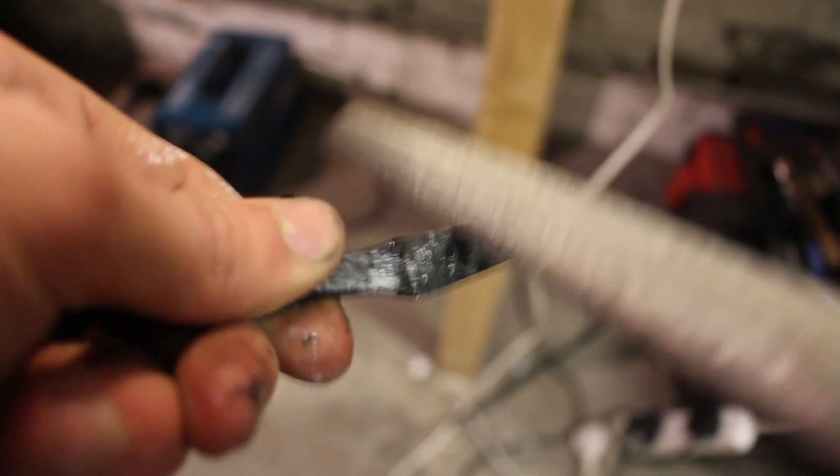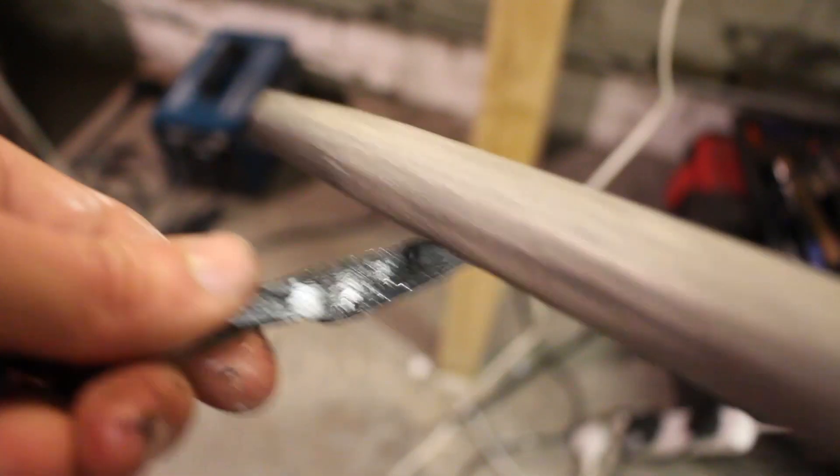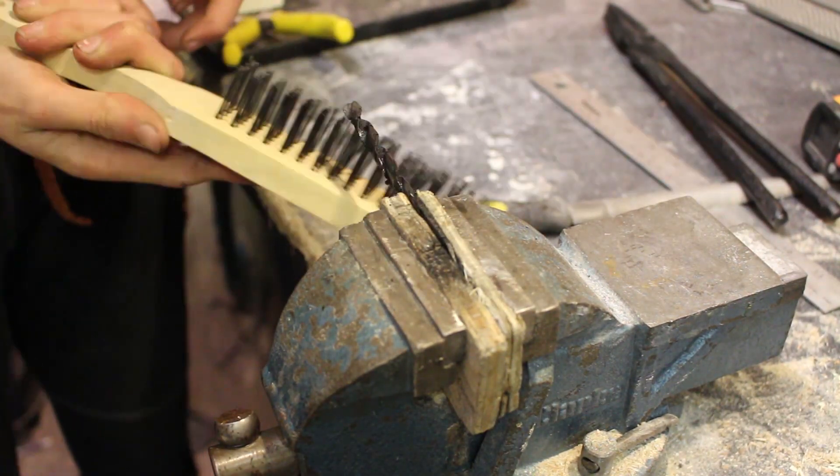Normally at this point in the knife making process you would then temper the blade so that it's not too brittle. But since I'm going to be casting the aluminum handle that's going to dump a lot of heat into the blade. So I'm going to be doing the tempering after I've cast the handle.